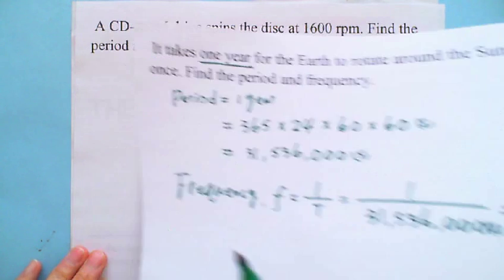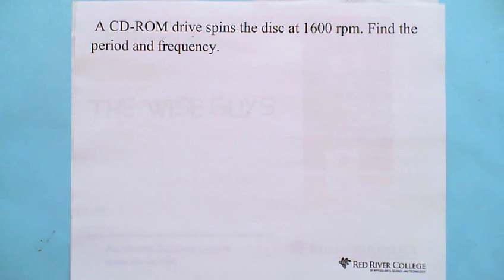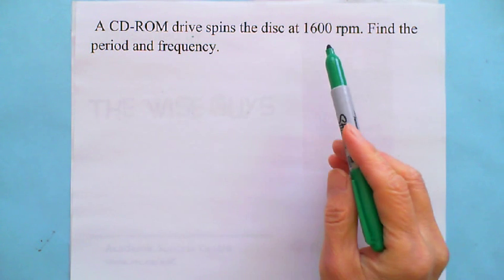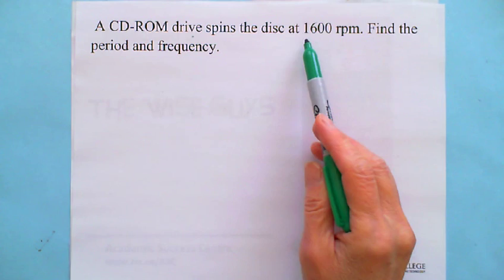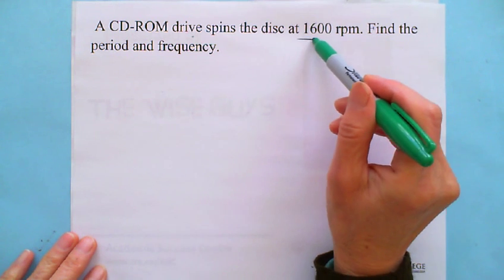The other example: a CD-ROM drive spins the disk at 1600 revolution per minute. Find the period and the frequency. This information is talking about 1600 revolution per minute. Obviously this gives us related to frequency.